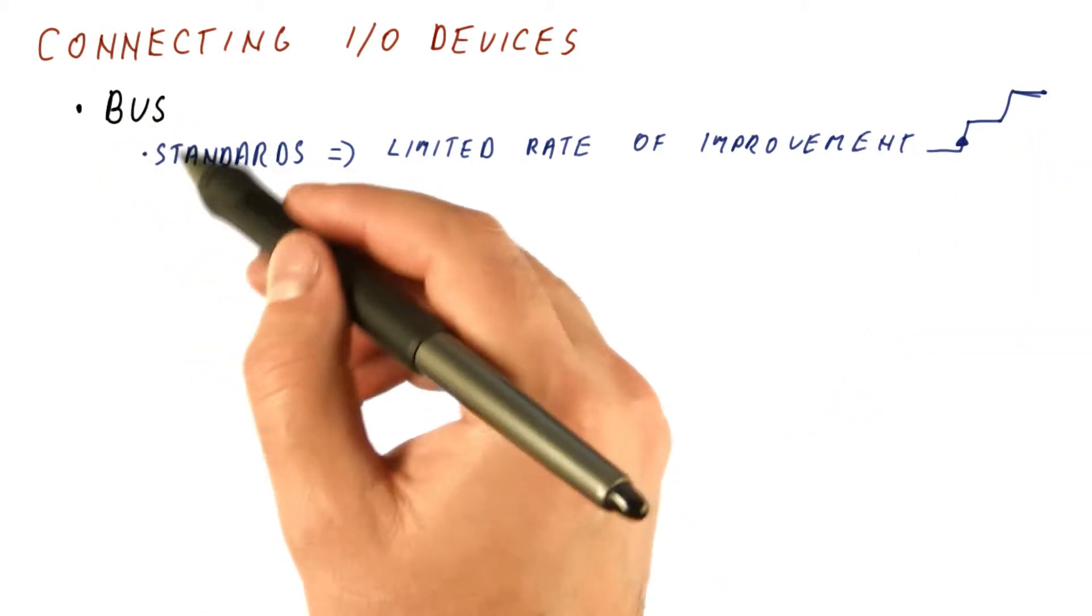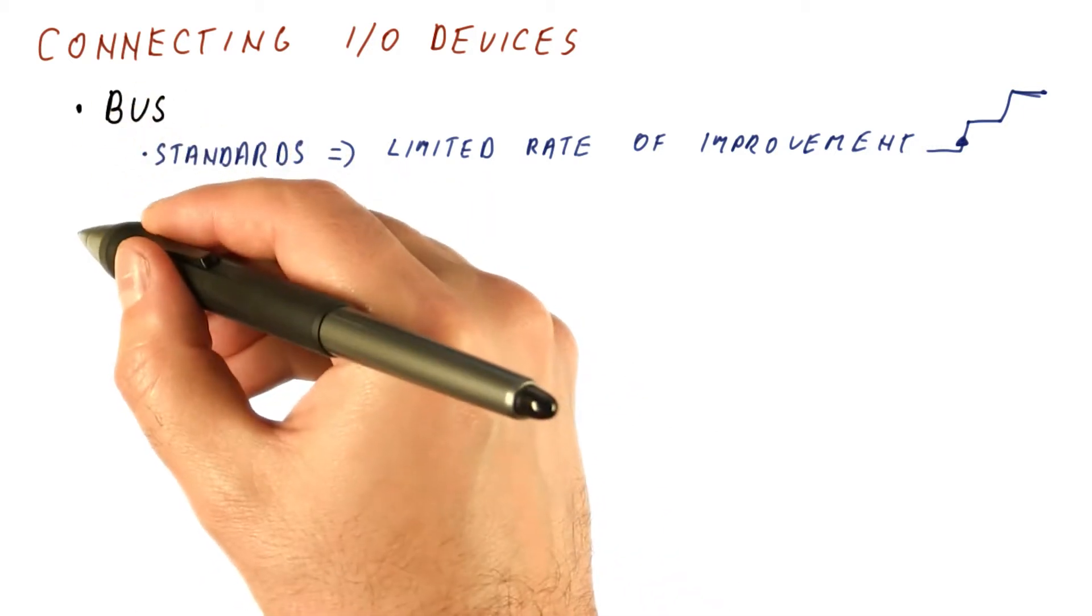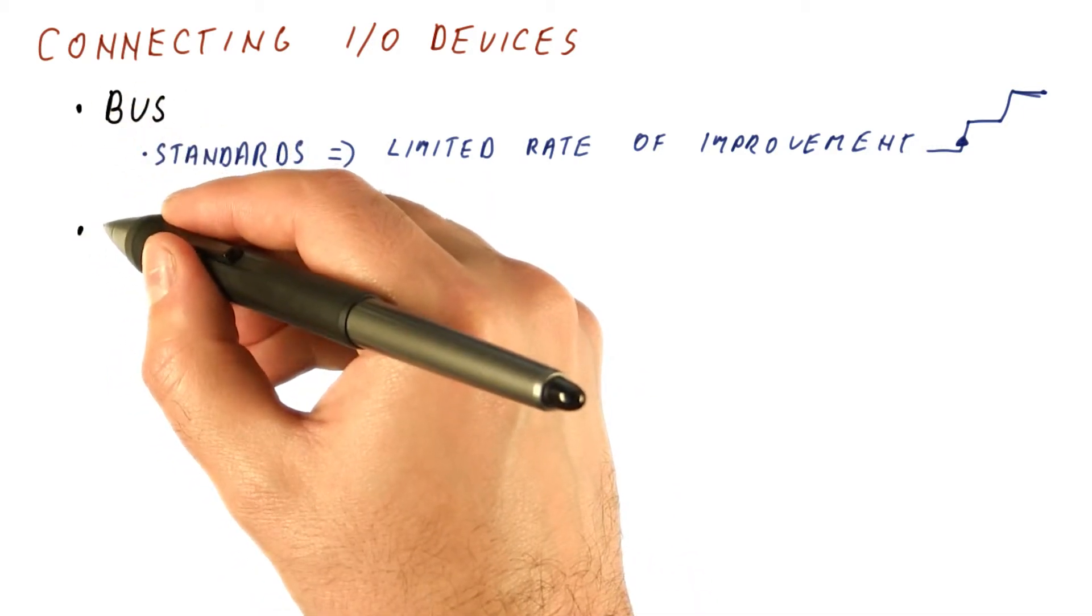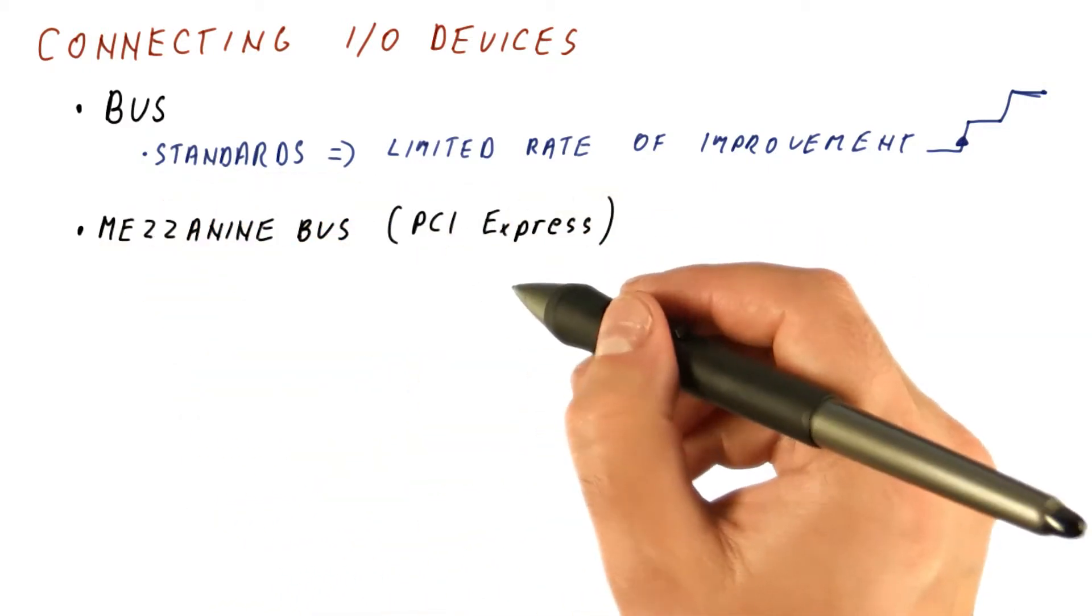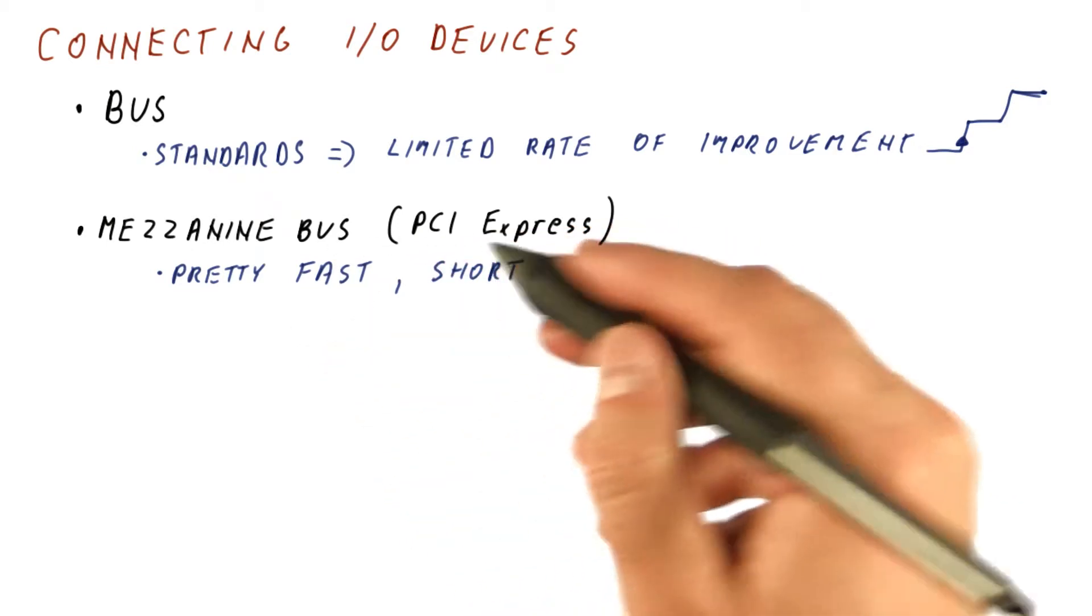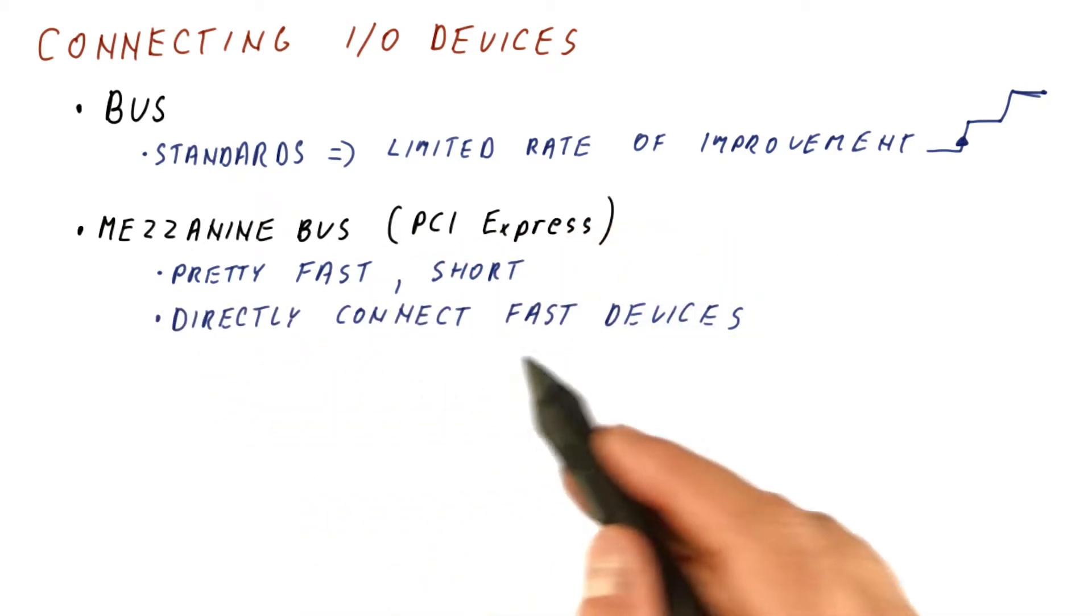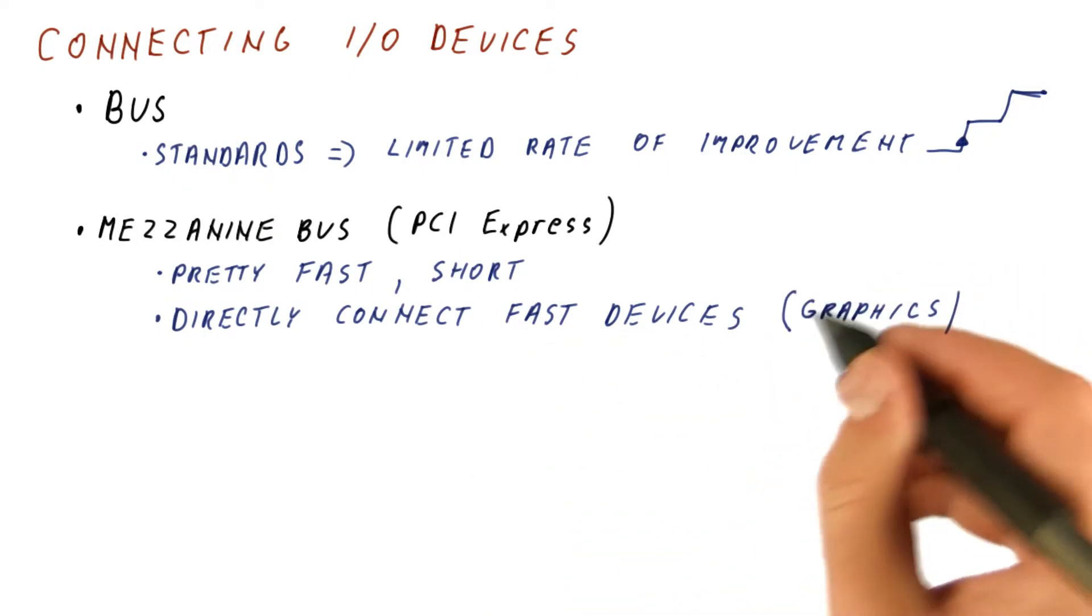Instead of having just one type of bus that connects to all I/O devices, typically we have a hierarchy of buses. You have a mezzanine bus, such as PCI Express. It will be pretty fast and short, so it can be used to directly connect fast devices like graphics to the processor.